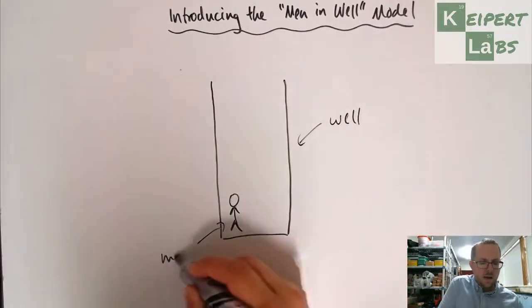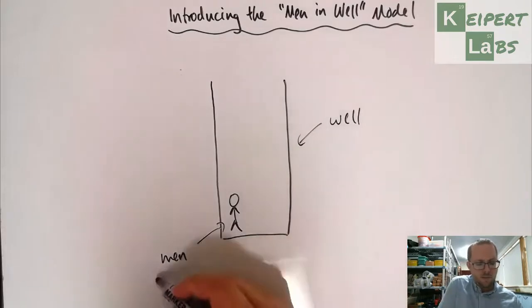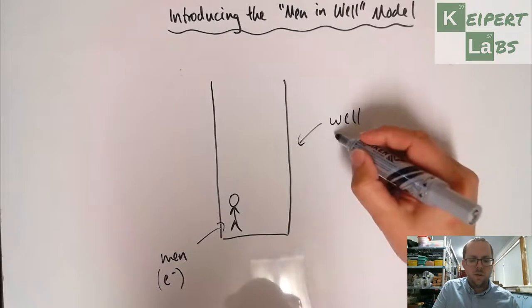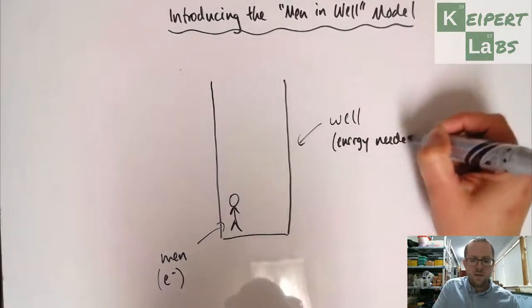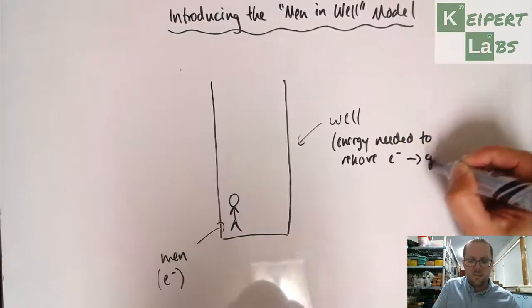The idea is that the men, you'll see at the moment I've only got one, but the men represent our electrons. And the well represents the energy needed to remove the electrons, that is to get the men out.